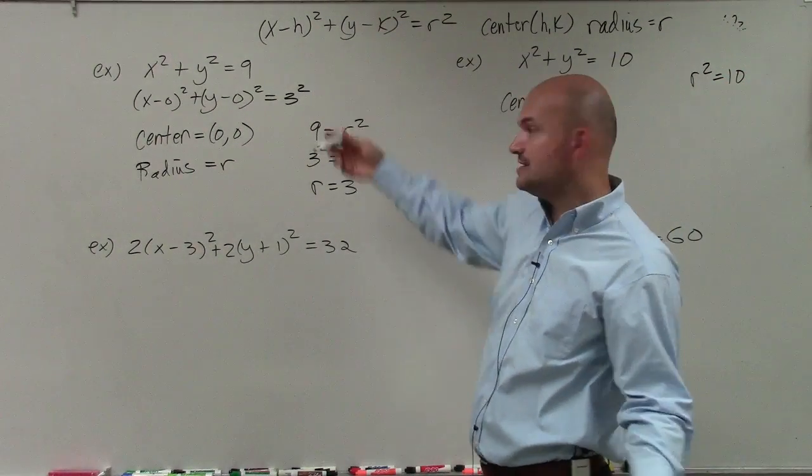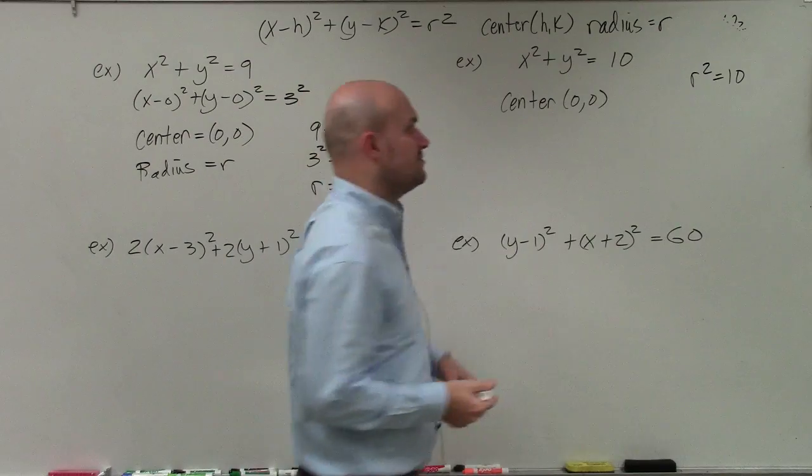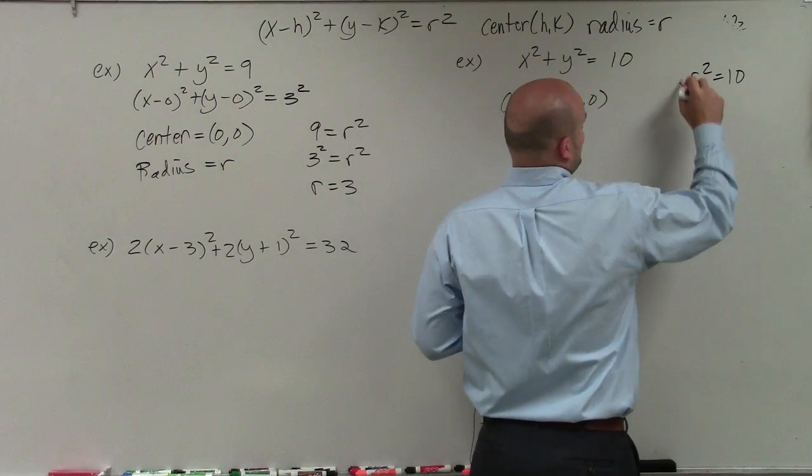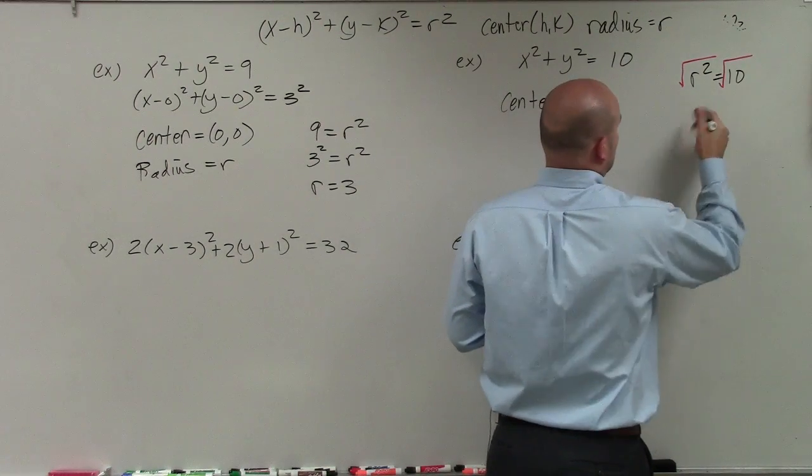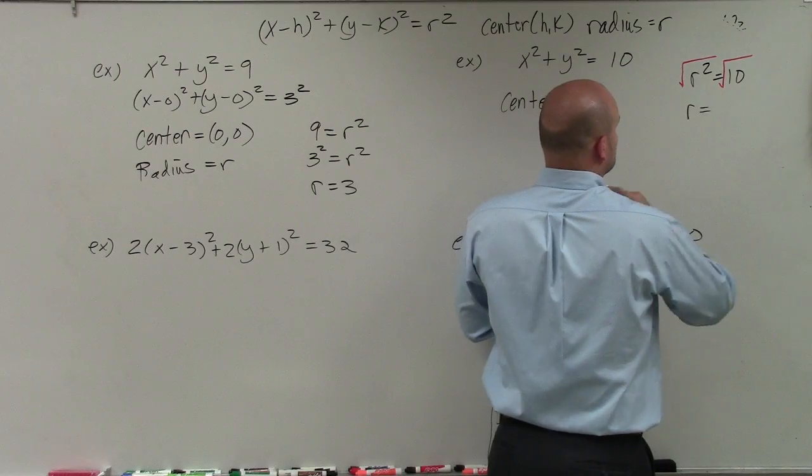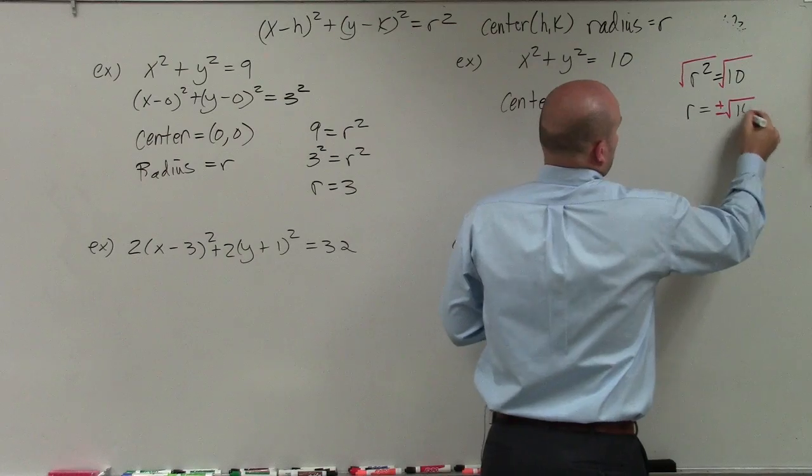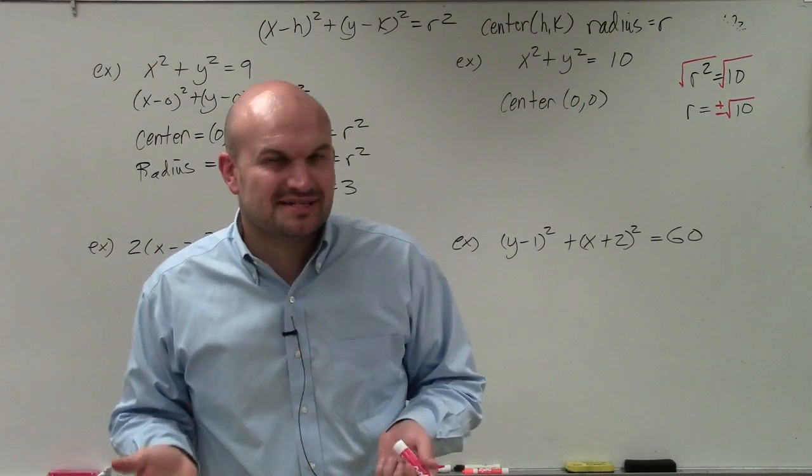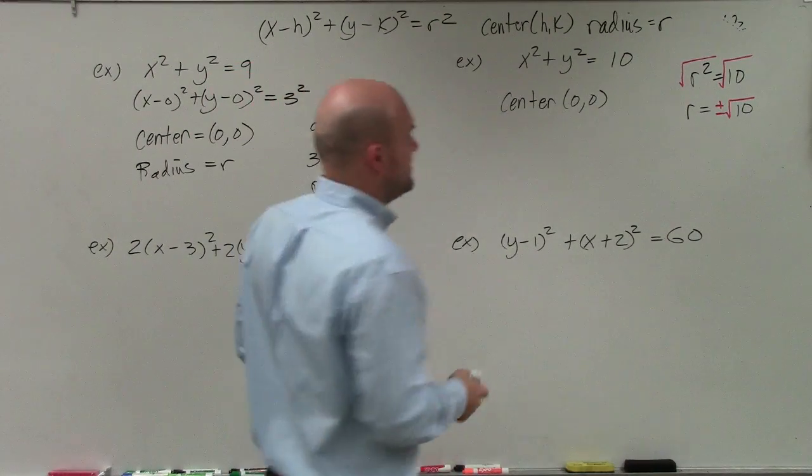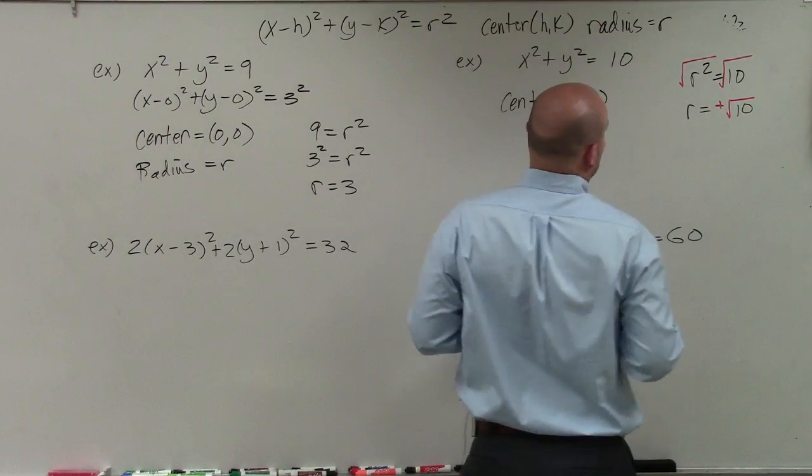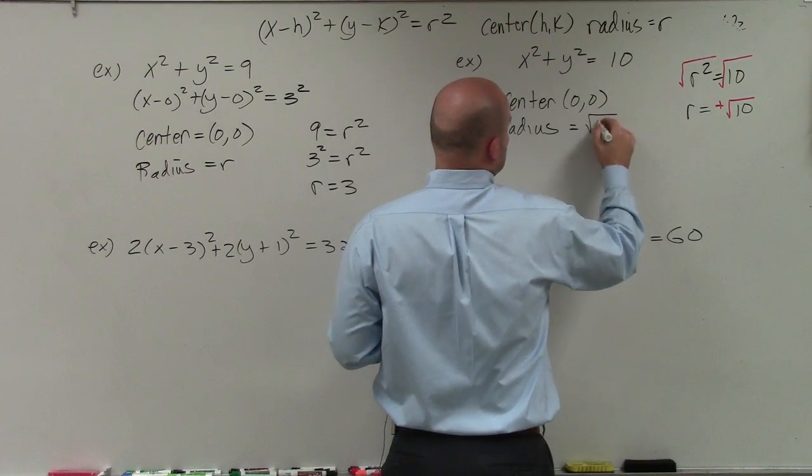I can't rewrite 10 as a number squared, so I'm going to have to use inverse operations. To undo taking the square, I'm going to take the square root. Then r equals—when you introduce the square root, we always include plus or minus. However, is it possible for the radius to be negative? No. Radius is a length; it's always going to be positive. Therefore, we're only going to include the positive root. The radius is equal to the square root of 10.